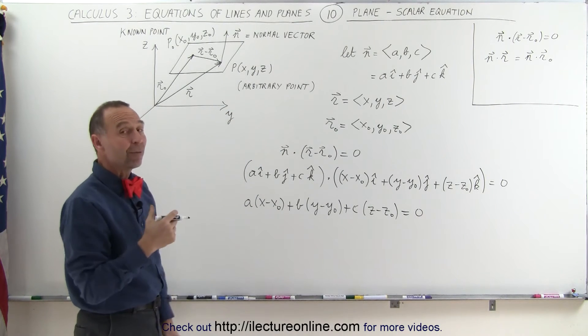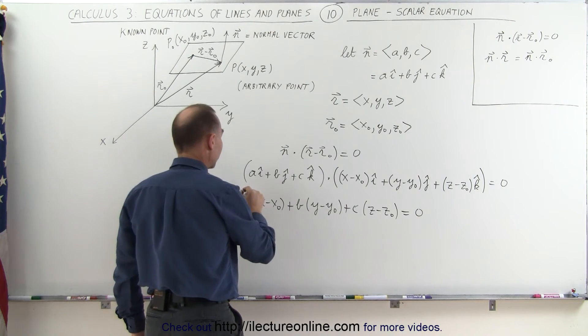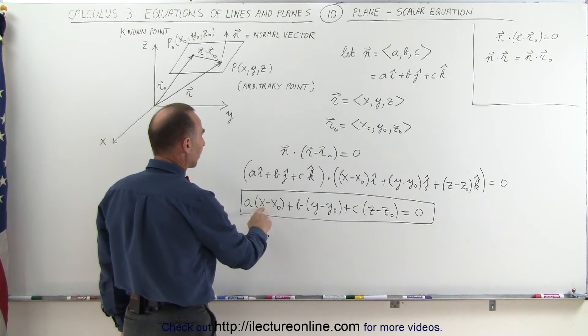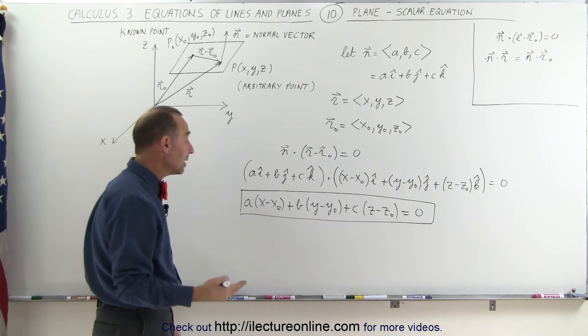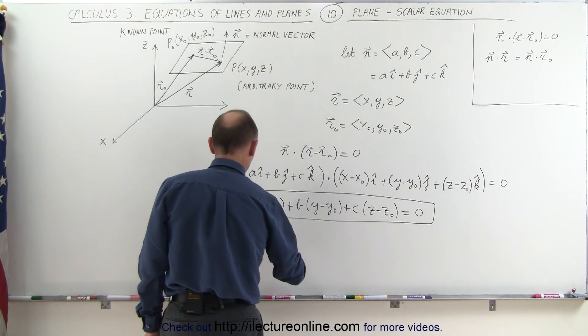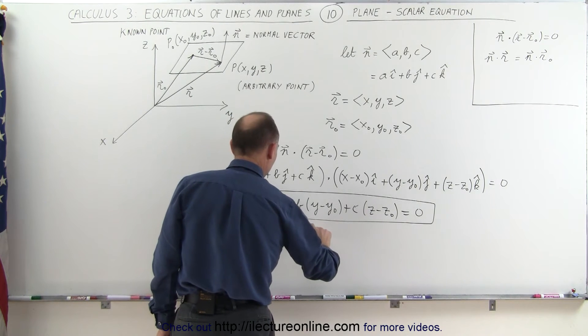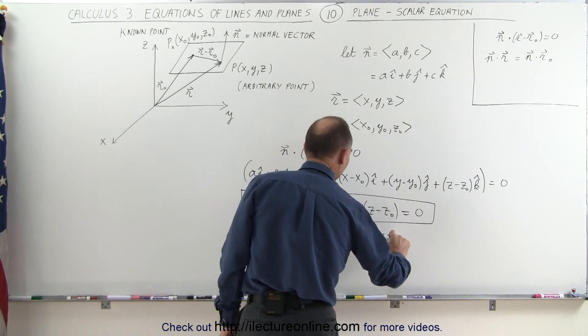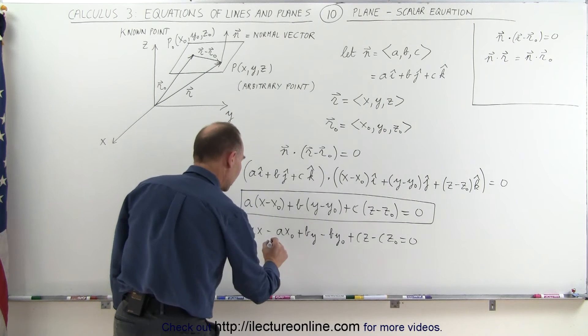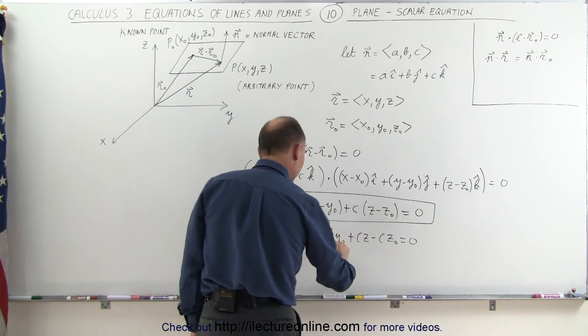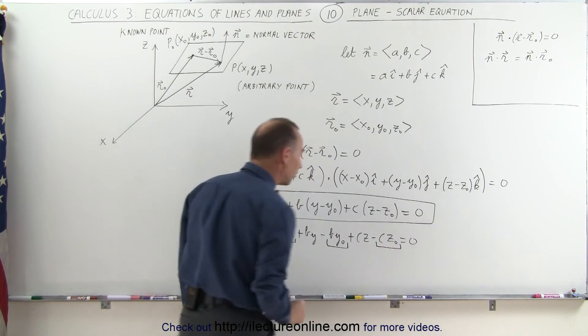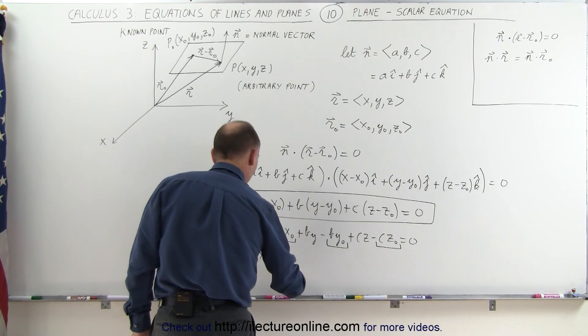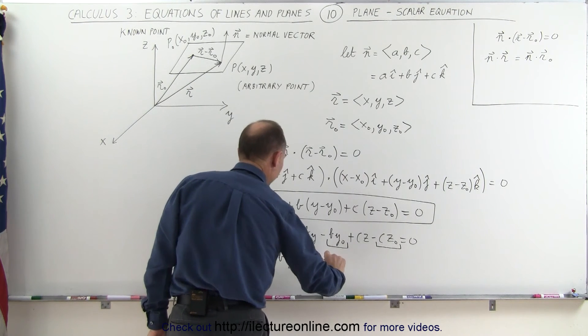Now we can simplify it maybe just a little bit more. This is one form of the equation. We can leave it like that or we can simplify it a little bit more. What we can do next is realizing that x sub-naught, y sub-naught, and z sub-naught are known quantities, which means I can write this as a x minus a times x sub-naught plus b y minus b times y sub-naught plus c z minus c times z sub-naught. And this is equal to zero. And I'm realizing that this is simply a constant, this is simply a constant, and this is simply a constant. I can add all that together and call that d, which means I can now write the equation as a x plus b y plus c z plus d equal to zero.